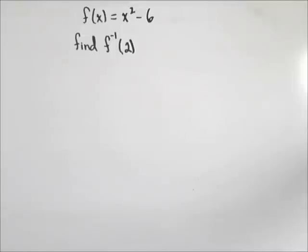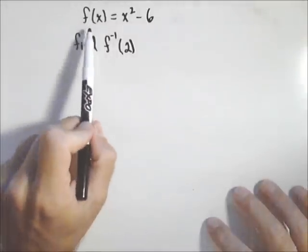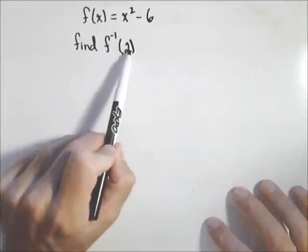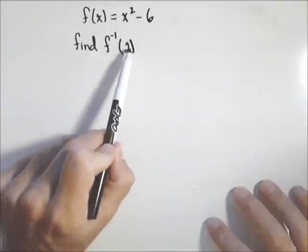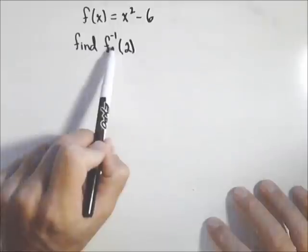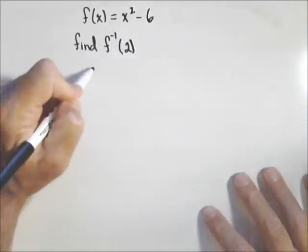Just a quick little video here discussing inverse notation. So we have f of x equals x squared minus six, and we're asked to find f inverse of two. Now remember, if it's an input to the inverse, it's an output to the original function.